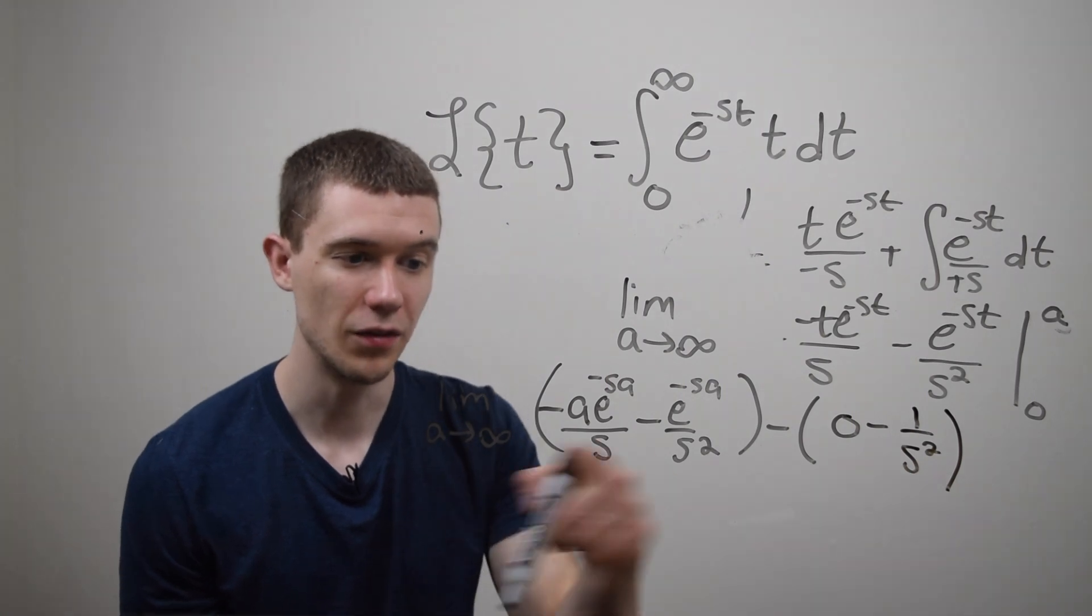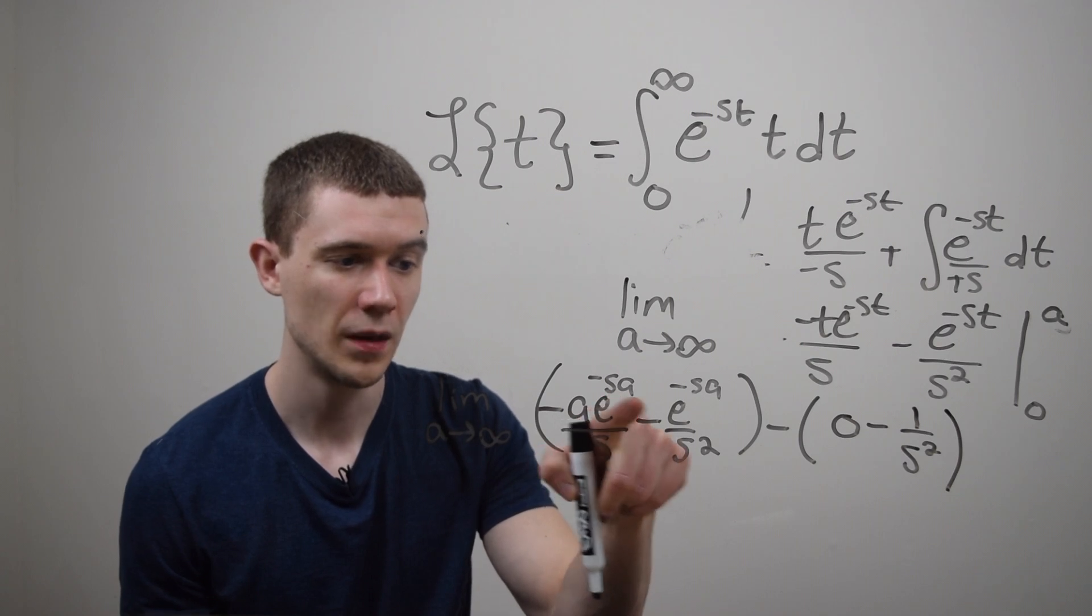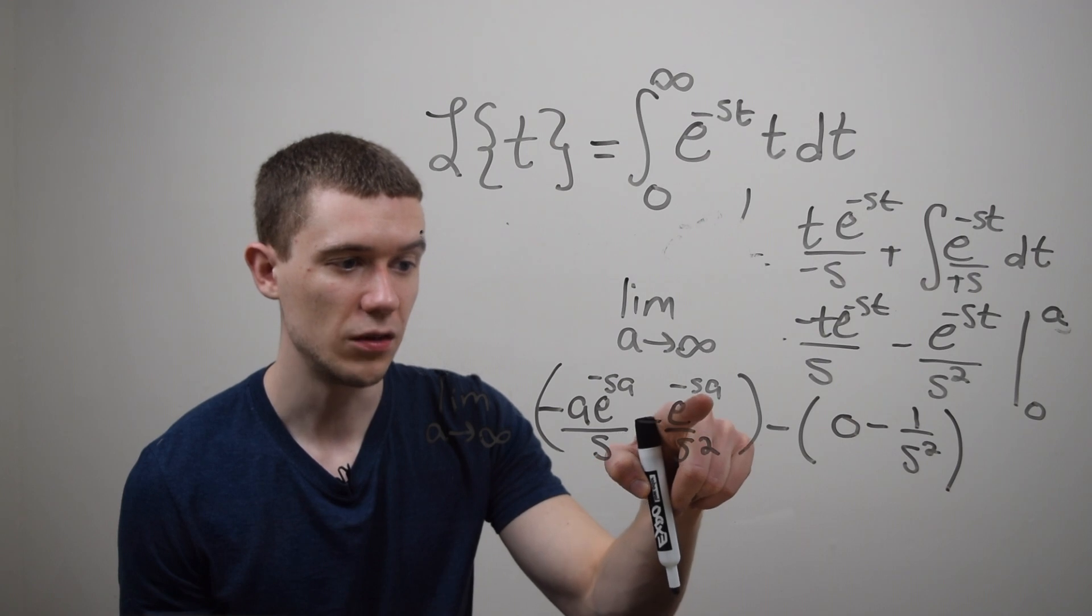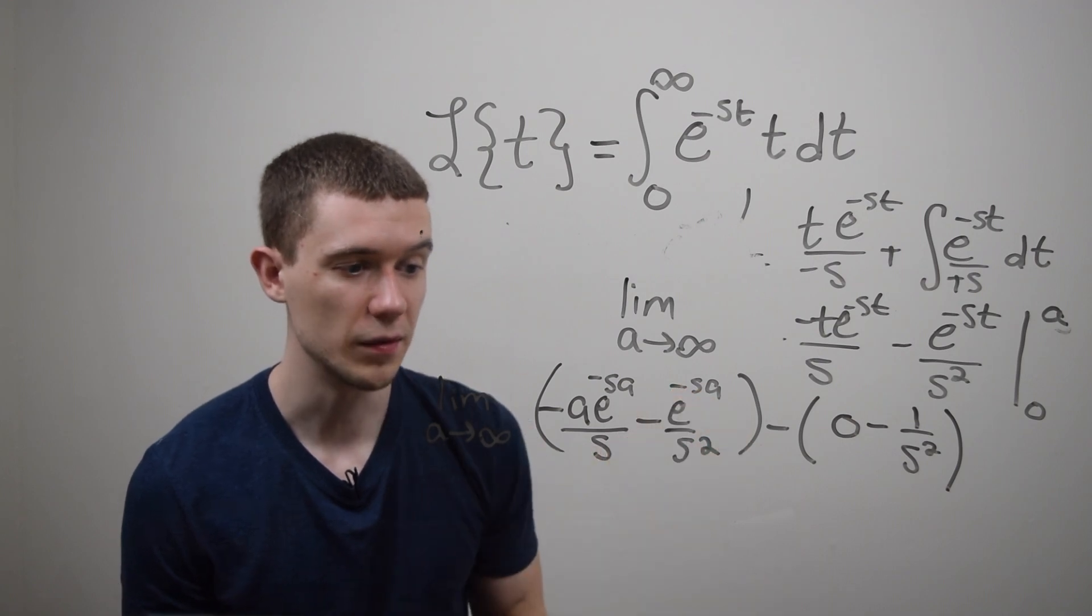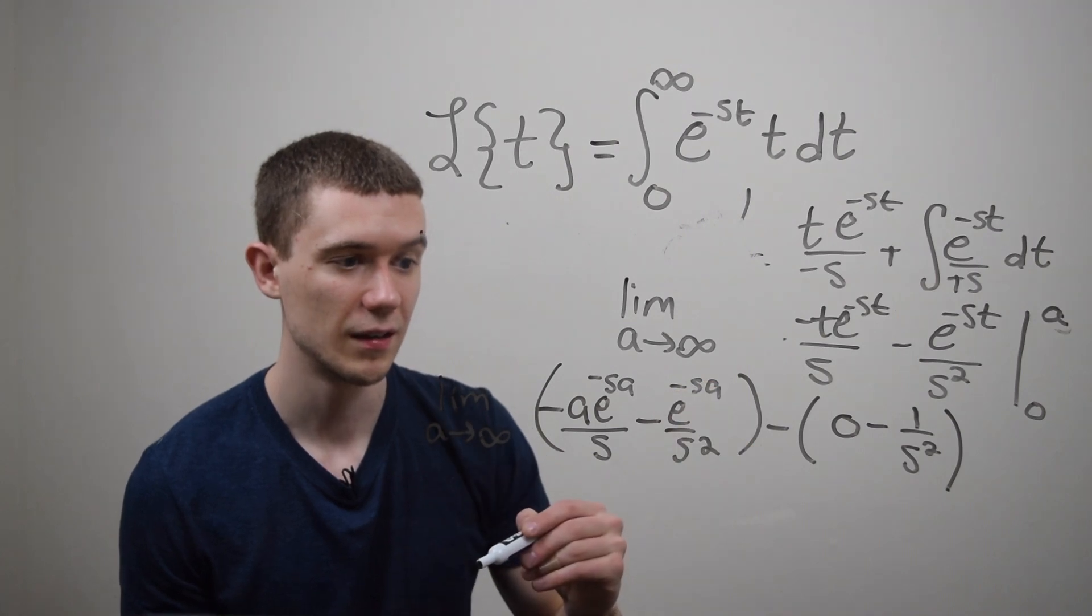And now I just have to evaluate this limit. Well what happens as a goes to infinity? Well here maybe this is a little bit easier. I would have e to the minus s times infinity or rather this is going to e to the minus s times infinity.